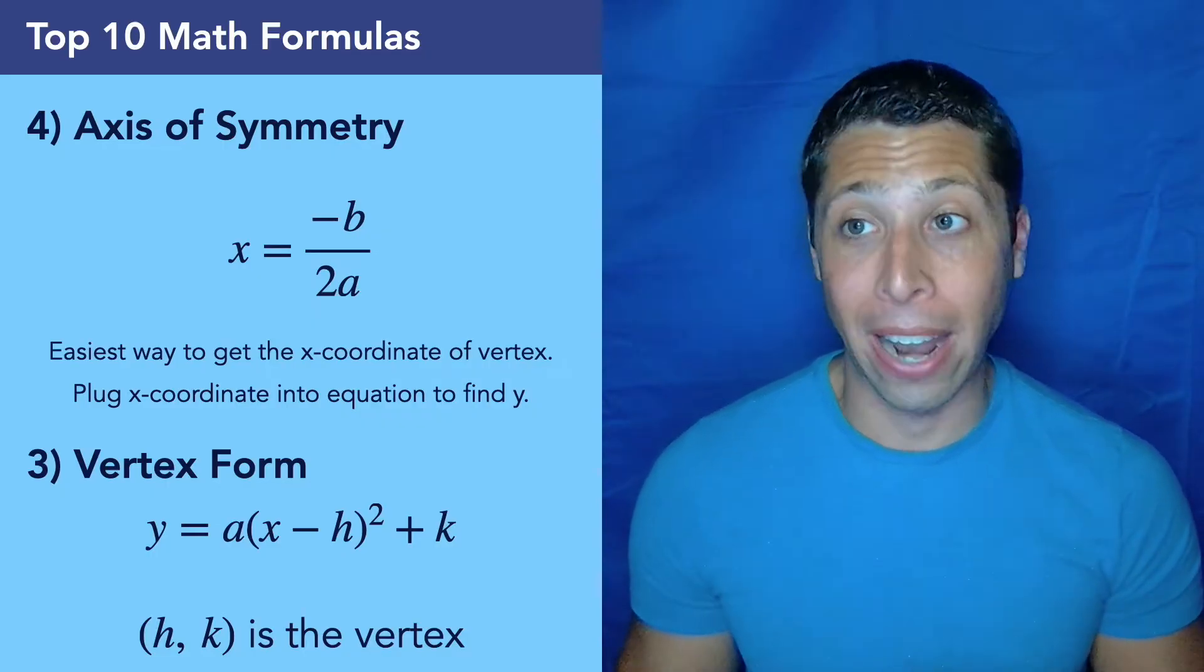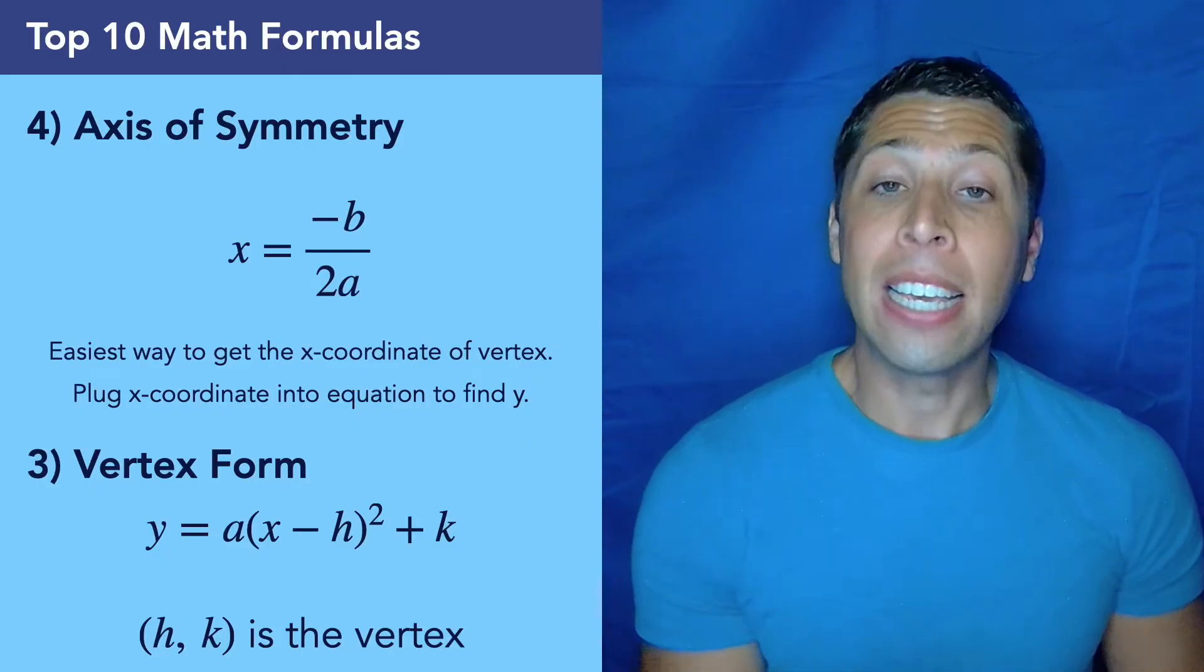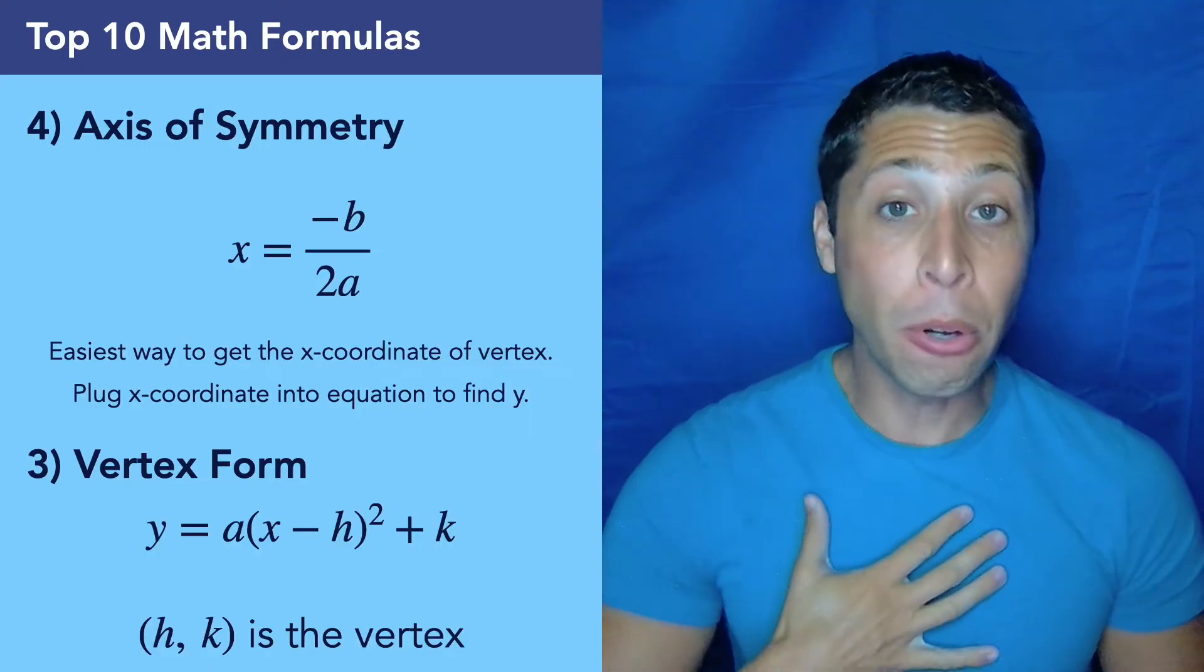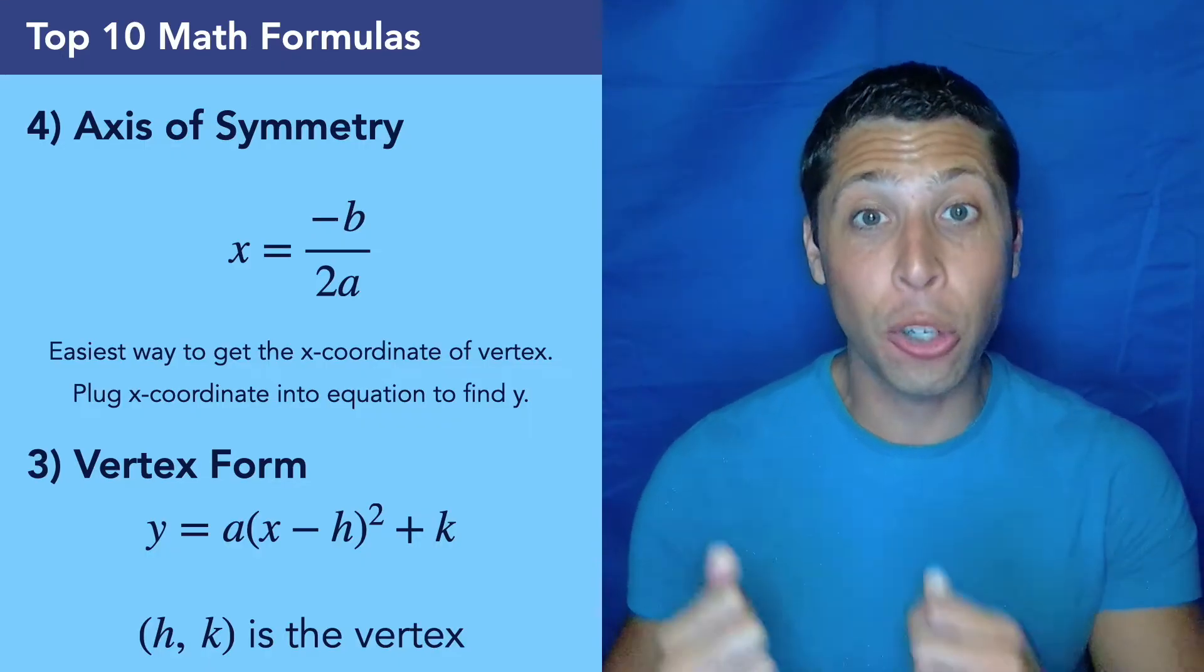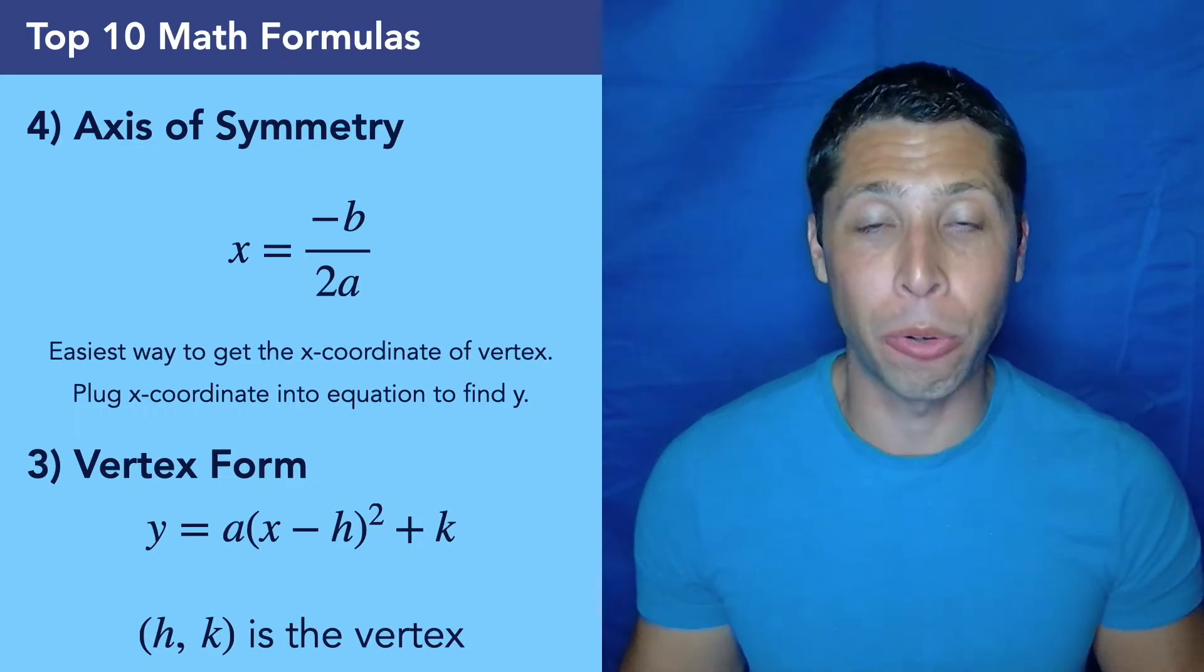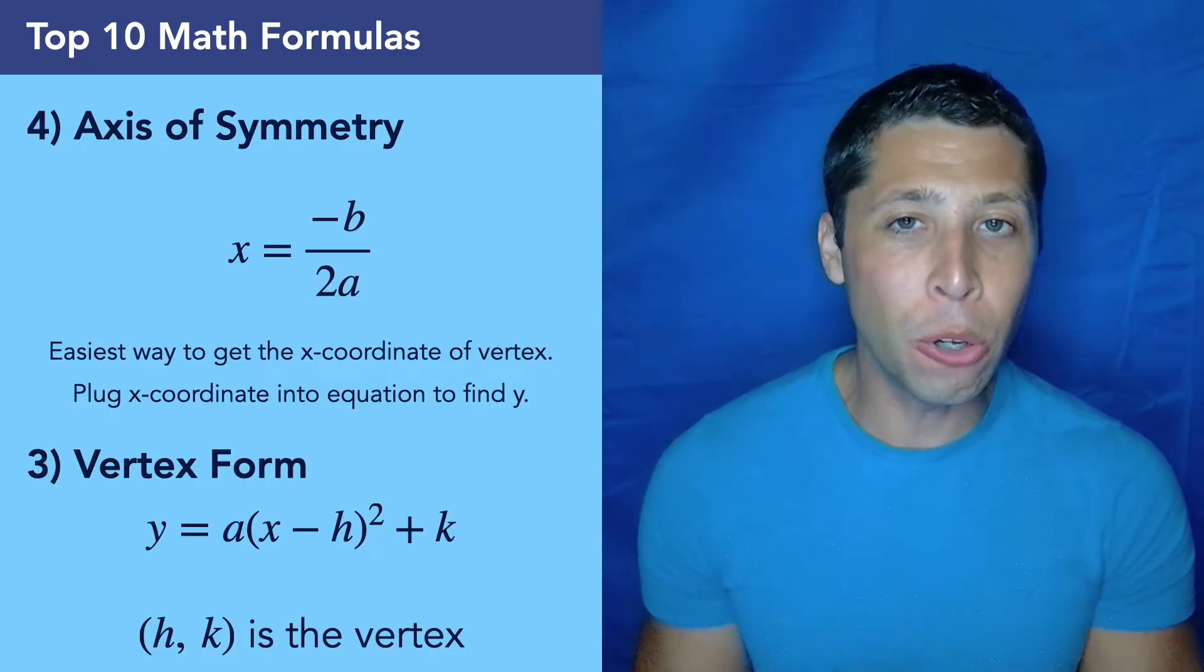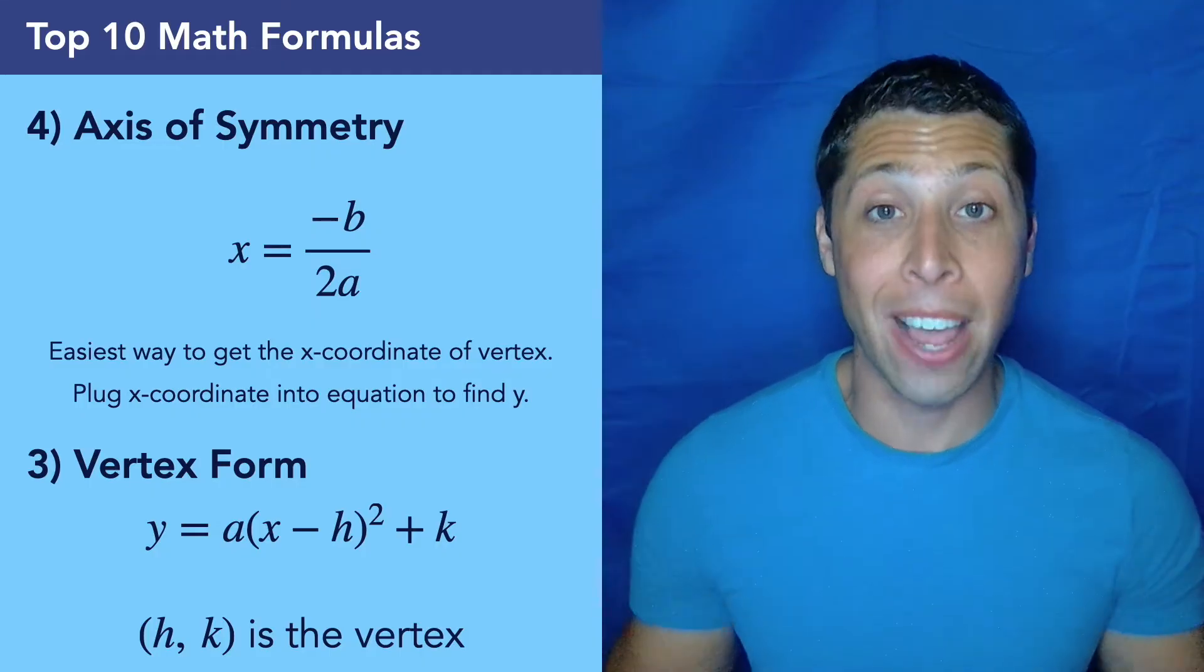And there are two ways to think about it. Number four, the axis of symmetry is technically giving us the vertical line that cuts right through the center of the parabola. But the most useful version of it for us is going to be to find the x-coordinate of the vertex, because if it goes to the center, it is going right through the vertex. So it gives us the x-coordinate, negative b over 2a. And then we can use that x-coordinate by plugging it into the equation and finding the y-coordinate. And then we have the vertex.